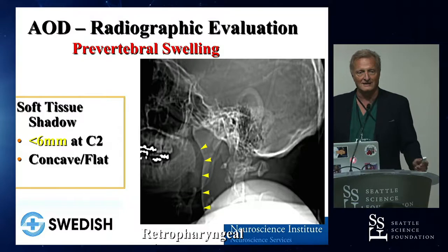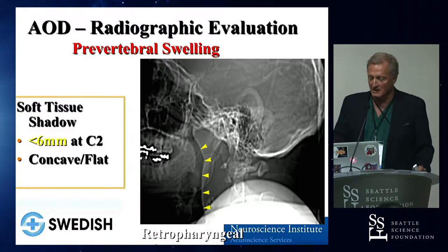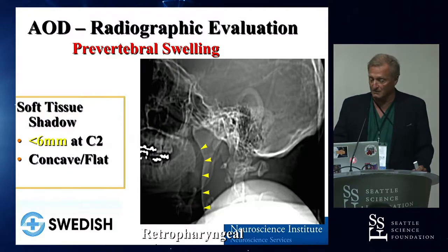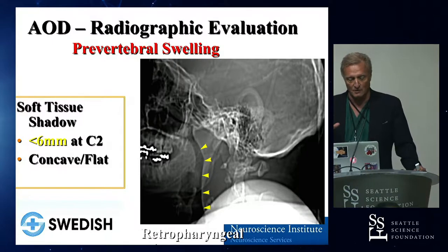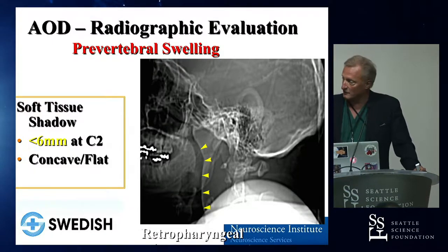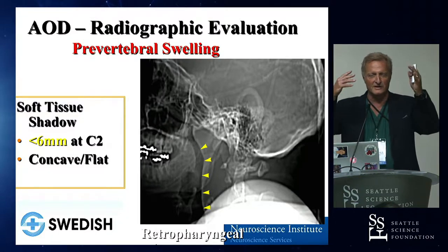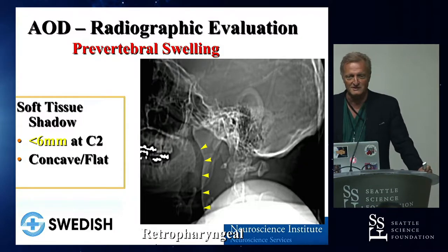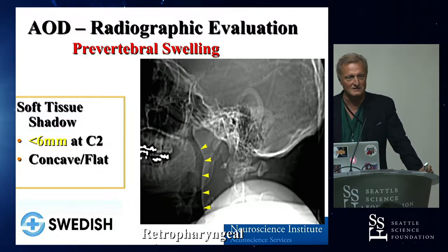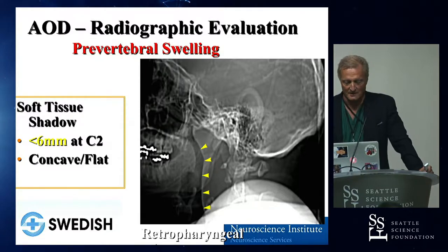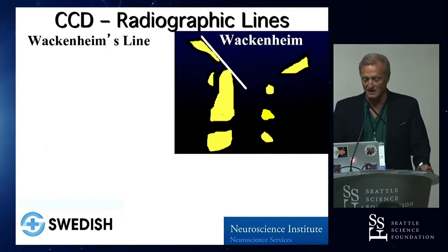There's been a historic lack of confidence and familiarity with this anatomy, and that translated from the basic radiographic era to the present era. One of the classic problems is that it was made too complicated. We all had these myriads of radiographic lines for rheumatology patients in our heads, when in fact it was not necessary. There are simple things like prevertebral swelling that tip you off.